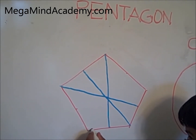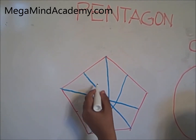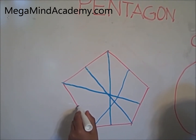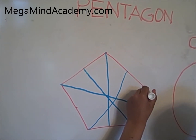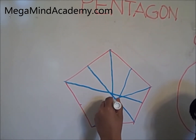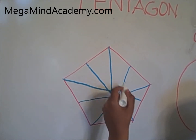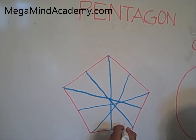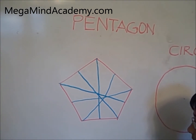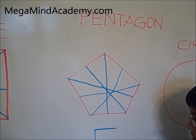This is another line of symmetry — it divided these two equal. And this is the last line of symmetry — it divided these two equal. This pentagon has five lines of symmetry.